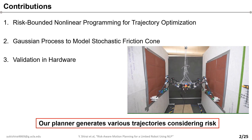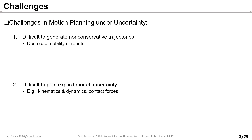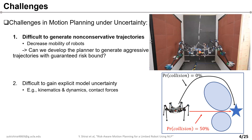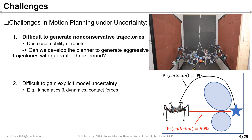Now we are going to explain the challenges for motion planning under uncertainty. We target two critical challenges. The first challenge is that it is difficult for planners to design non-conservative trajectories. For example, this video shows the robot climbing on the walls. In this case, the planner does not account for any randomness such as stochastic gripping forces, so the robot falls from the walls. To avoid this problem, one naive approach is to generate conservative trajectories, which increases the probability of success but sacrifices the mobility of robots.